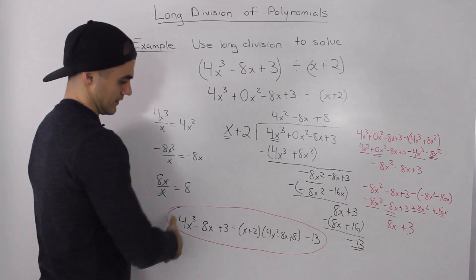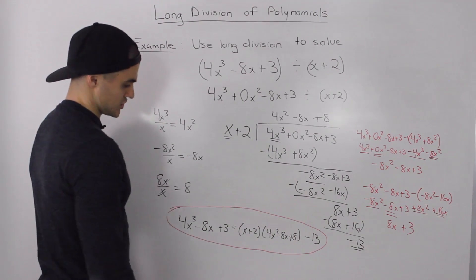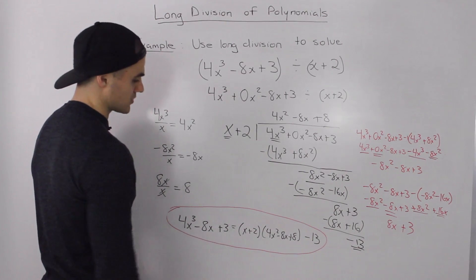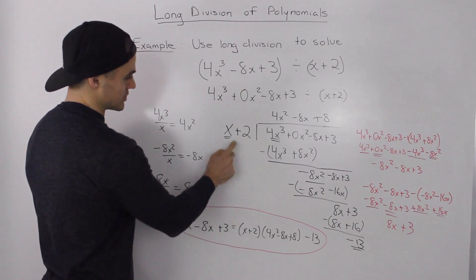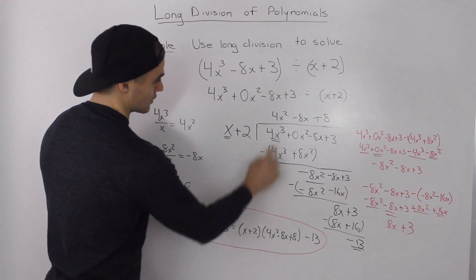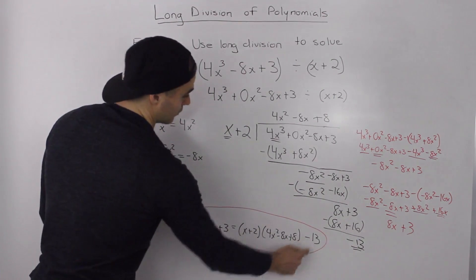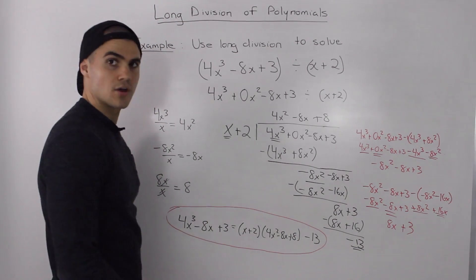So, taking this result here, and then rewriting it in a division statement, our dividend of 4x cubed minus 8x plus 3 is equal to our divisor, x plus 2, times our quotient of 4x squared minus 8x plus 8, minus our remainder of 13.